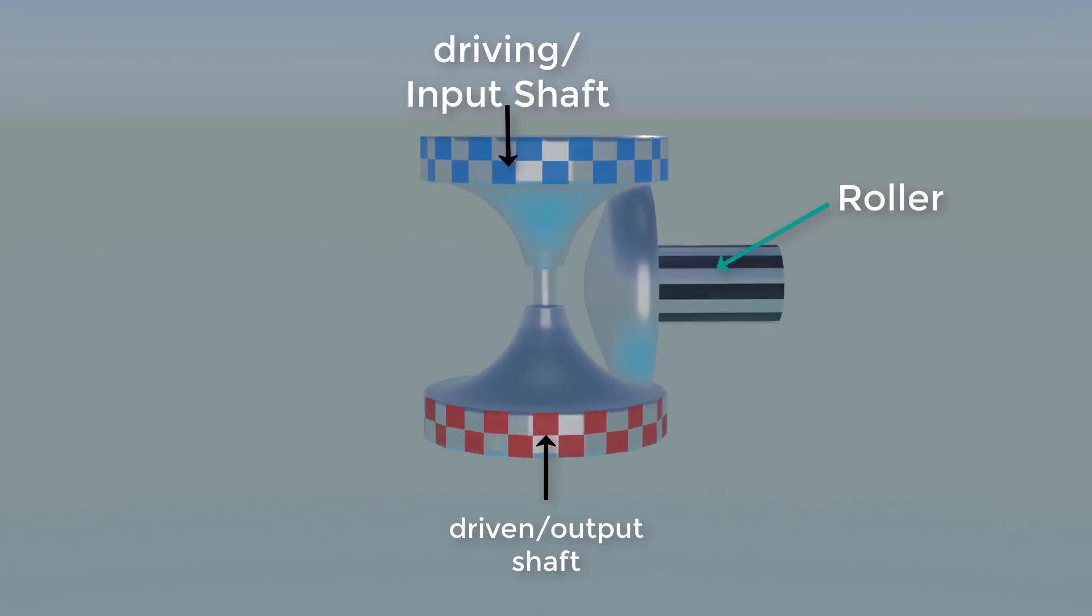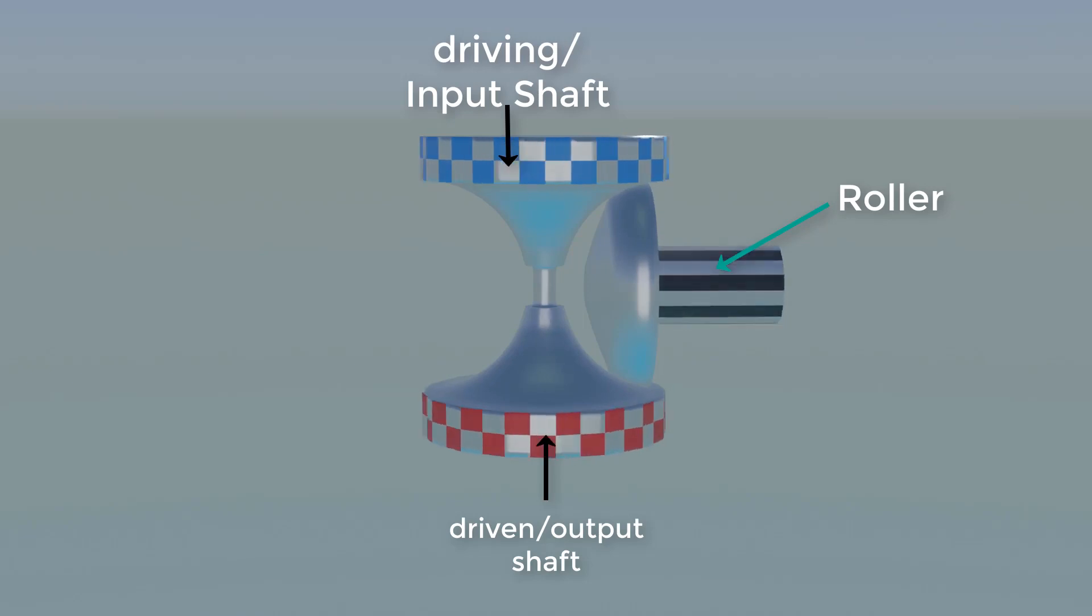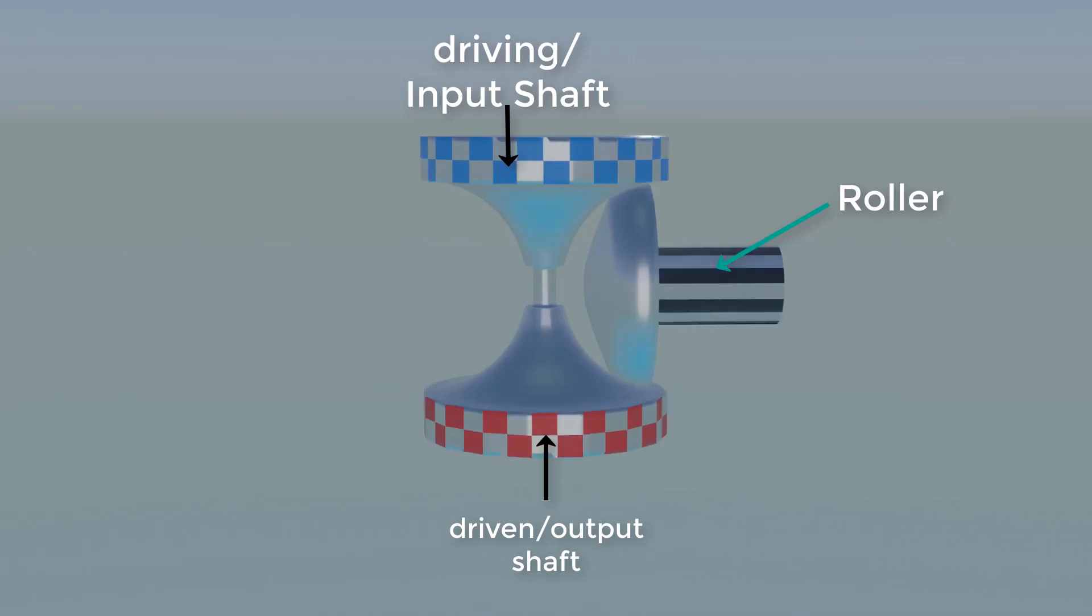And the last part is the roller that rotates freely about its own axis while making contact with the two other discs. Let's see how it works. When the roller is in the middle position, it transmits the same power as the driving disc because the contact of roller diameter is same in both cases.